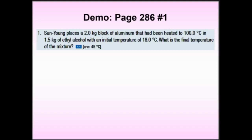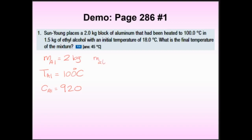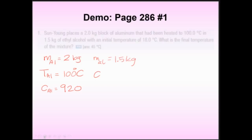Because one loses heat very quickly and the other accepts it slowly, you can't assume a perfect average. Let's list variables using proper subscripts: 'al' for aluminum (capital Al) and 'a' (lowercase) for alcohol. Mass of Al = 2 kg, initial temperature of Al = 100°C, specific heat of Al = 920 J/(kg·°C). Mass of alcohol = 1.5 kg, initial temperature of alcohol = 18°C, specific heat of alcohol = 2460 J/(kg·°C).